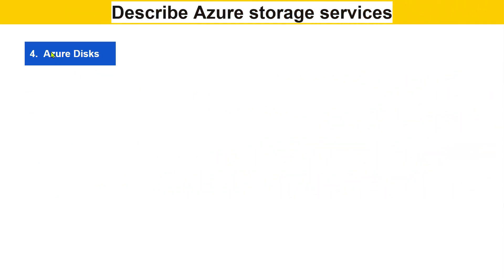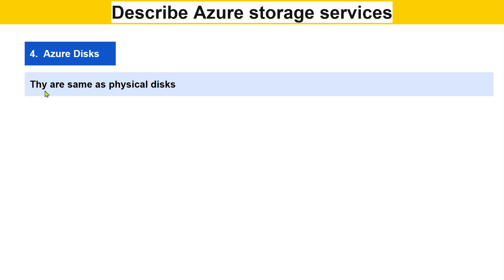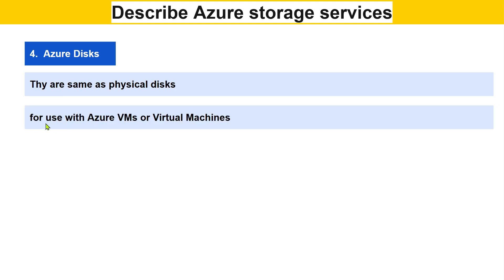The fourth storage service type is Azure Disks. These are similar to physical hard drives in your laptop or desktop, but they are used with Azure VMs (Virtual Machines). Azure Disk is used to provide storage for virtual machines.